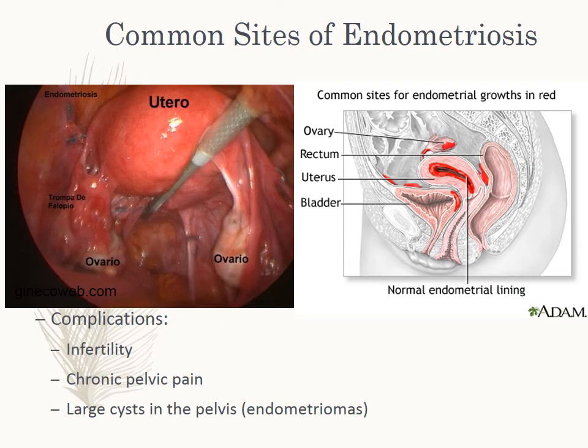Common sites for endometriosis: endometrial growths can be in the ovary, bladder, rectum, and outside of the uterus, as well as the pelvic peritoneum, cervix, and inguinal area. The overall incidence is 5 to 15% of women in the reproductive age, and it is seen in 40% of women with infertility as well. The inflammation can damage the sperm or egg and interfere with movement in the fallopian tubes. Adhesions can be in those fallopian tubes and prevent fertilization.